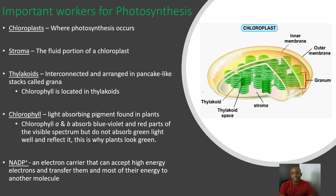Chlorophyll is located inside of our thylakoids — that's where we have our chlorophyll. Chlorophyll is a light-absorbing pigment found in plants. Chlorophyll A and B absorb the blue, violet, and red parts of the visible spectrum, but they do not absorb green light well and reflect it instead.